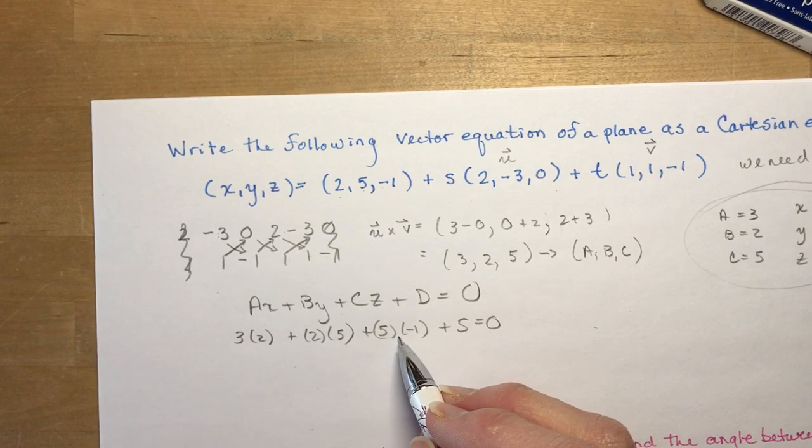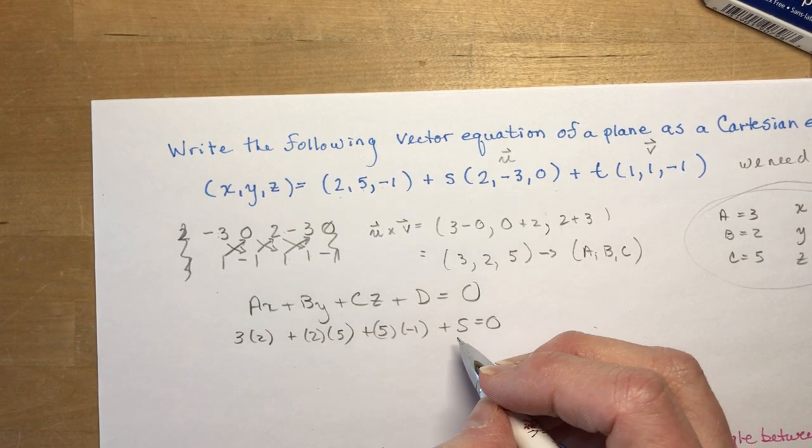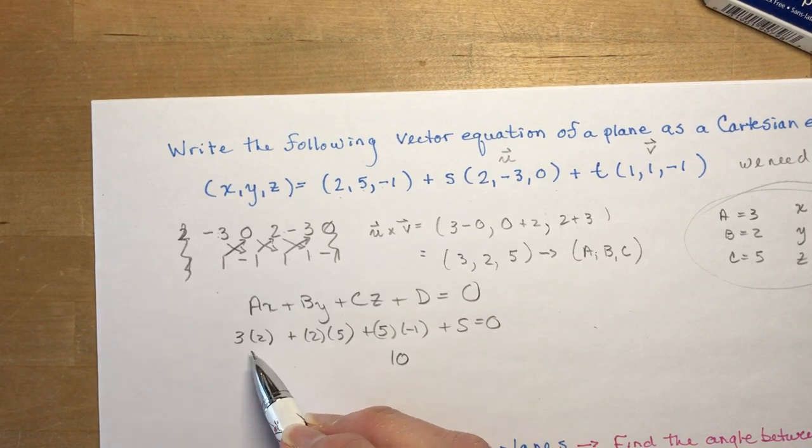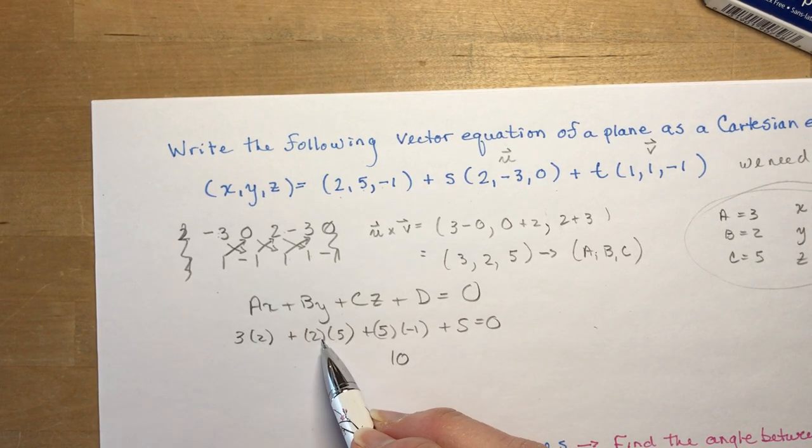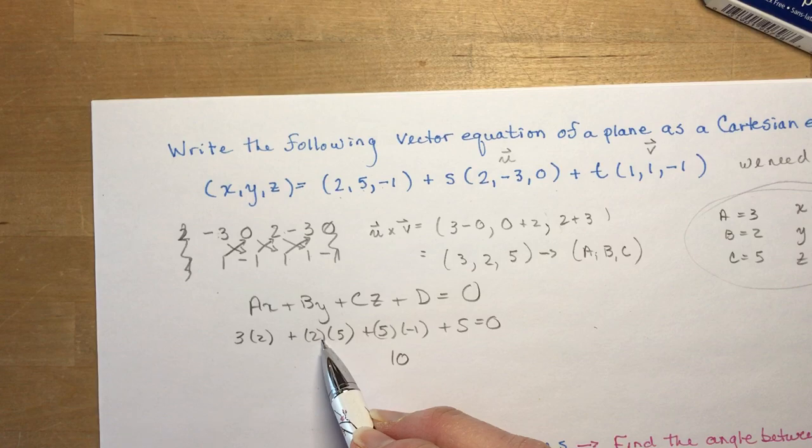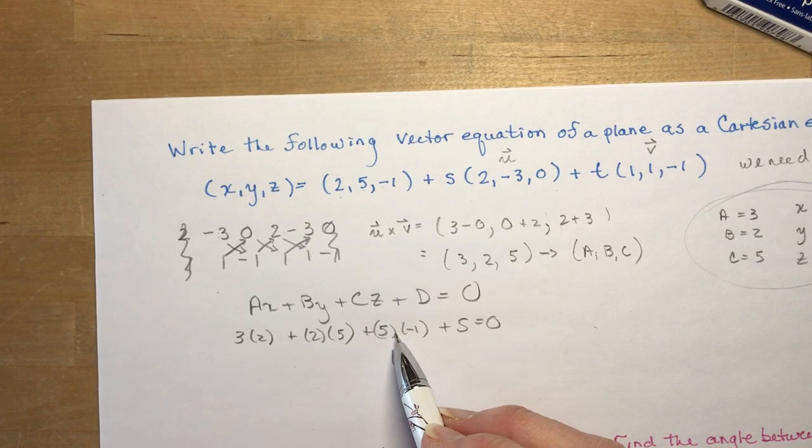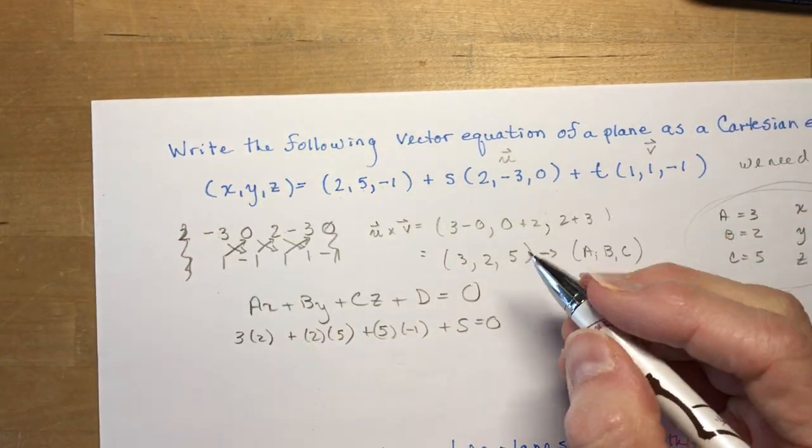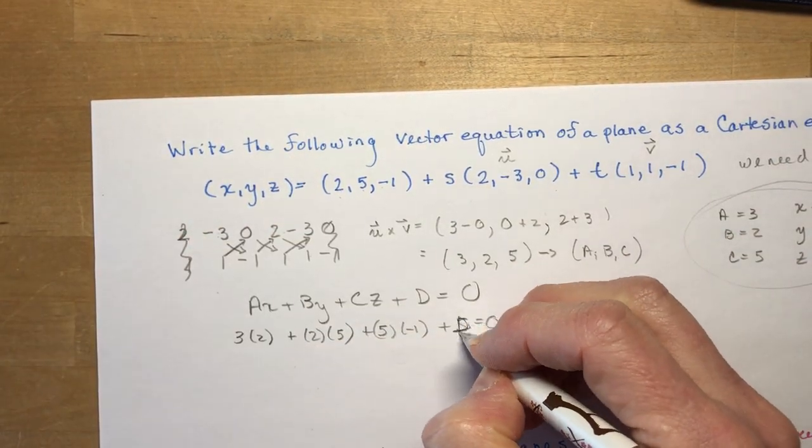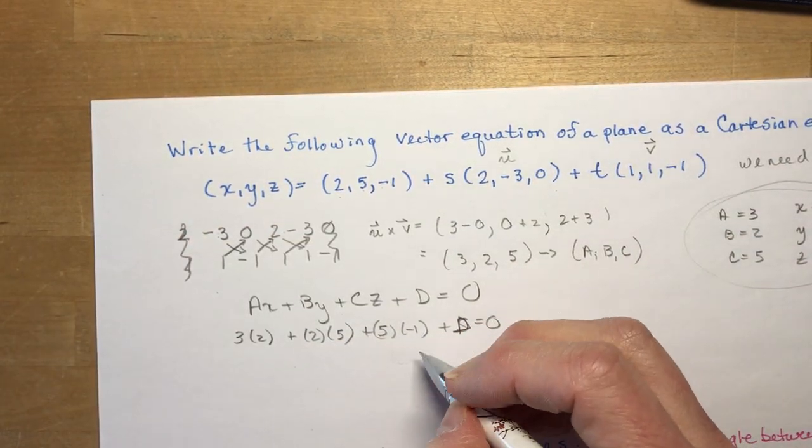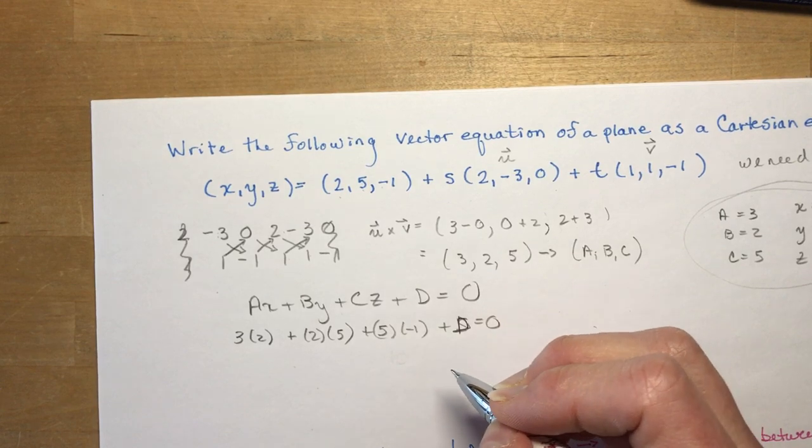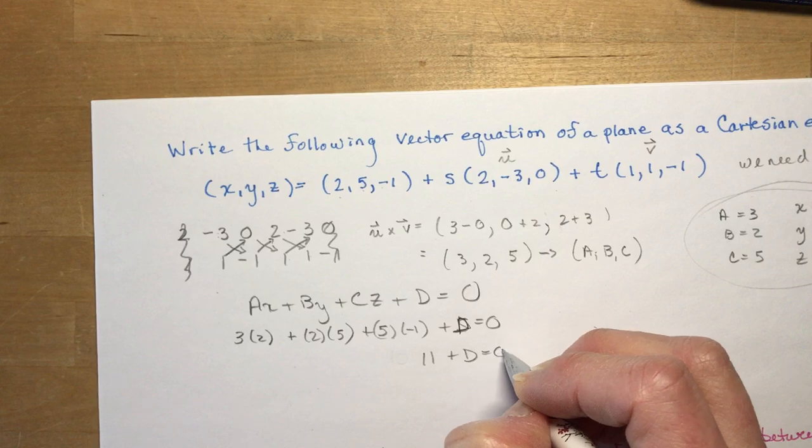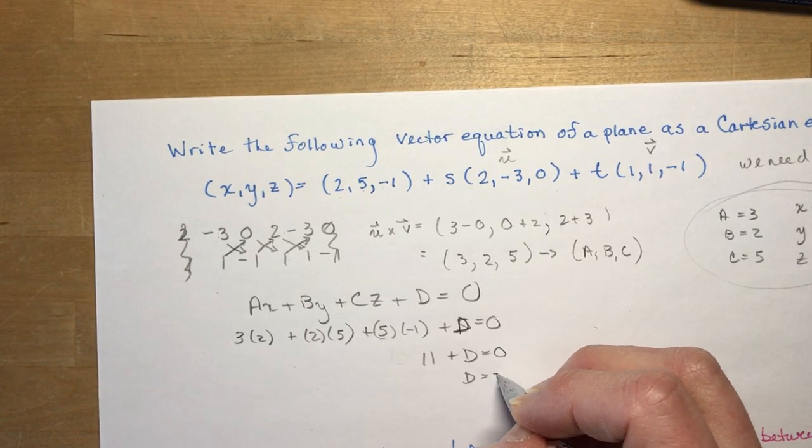And let's see what we get with that. We get 6 plus 10 is 16, minus 5. 16 minus 5 is 11. 11 plus D equals 0. So D equals negative 11.